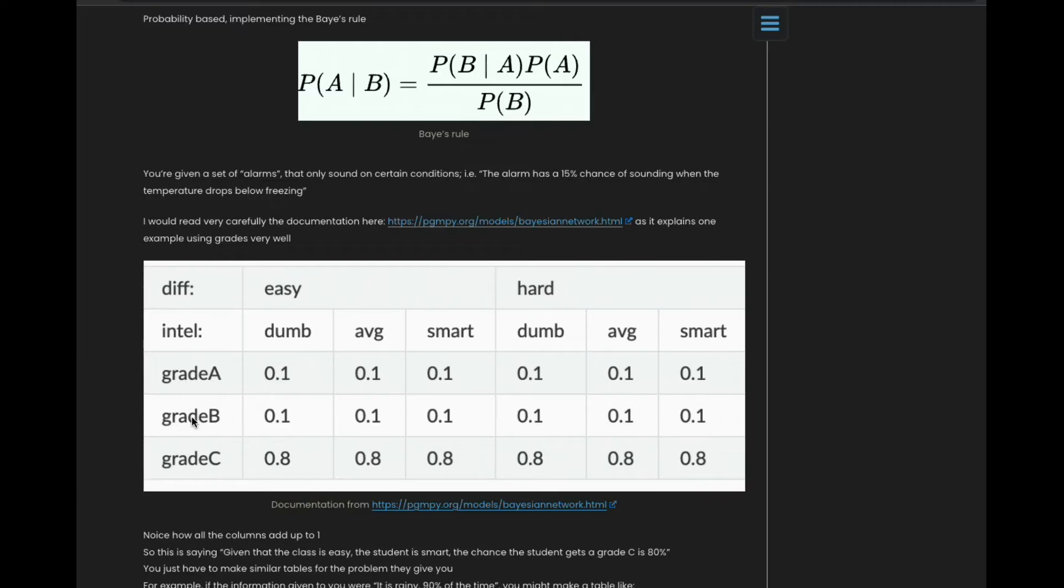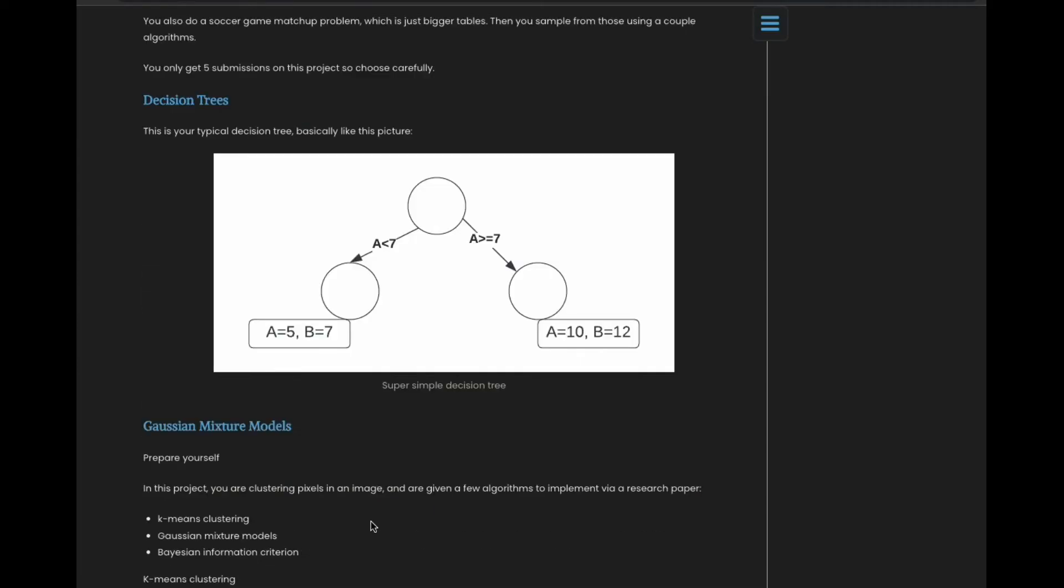Decision trees is another project you'll do. I won't go into that, but it's essentially what you do in Machine Learning for Trading if you've ever taken that. But if you haven't, you basically are just going to get these data points and you make a decision tree in NumPy splitting on each column with a certain threshold on each column.